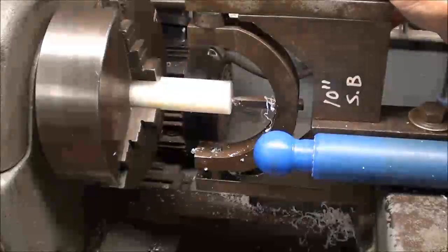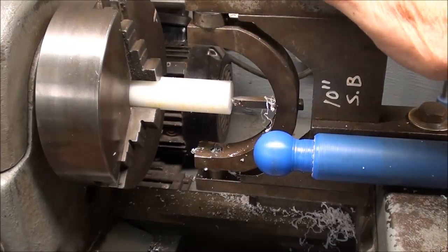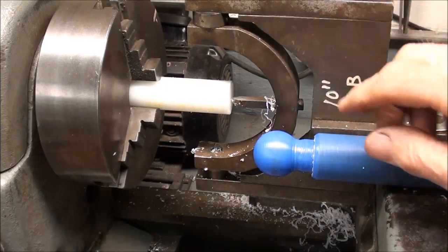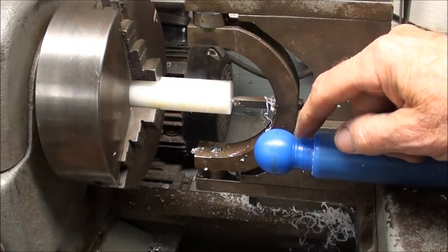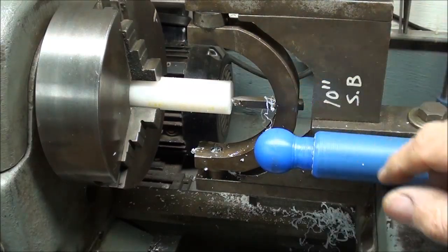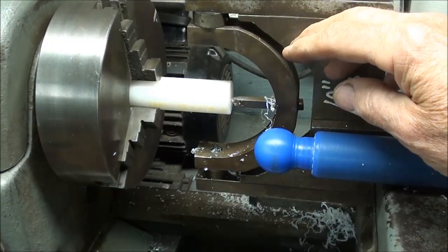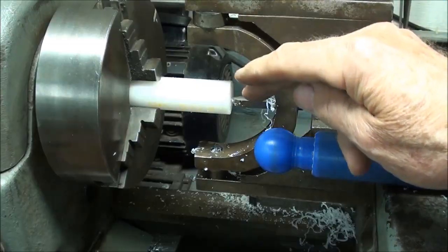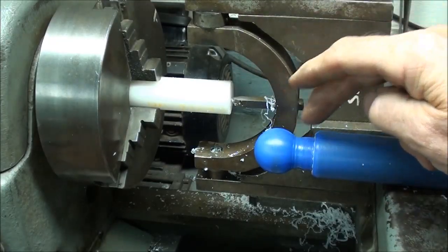This is a homemade ball turning attachment. I did not make it. It is capable of turning a full ball or a ball on the end of a stem. You can't produce a totally free-form ball like a ball bearing because there has to be some way to hang on to it, but in this video I'm just going to show you how to make a radius with it and in the next video I will actually turn a ball.